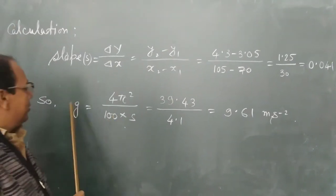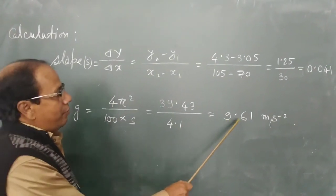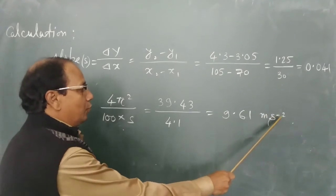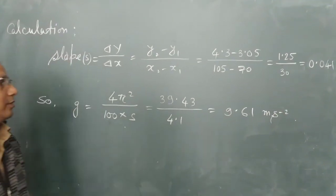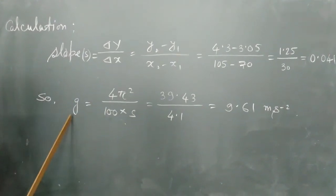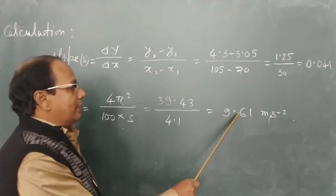Now here the value of g we got is 9.61 m/s². As we know that the acceleration due to gravity on the surface of the earth is 9.87 m/s².